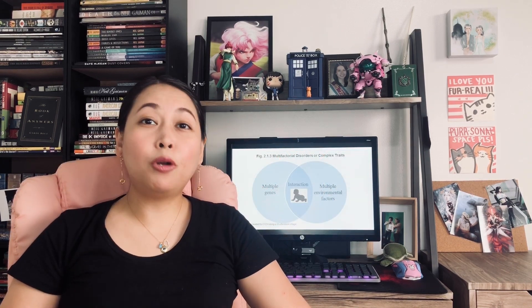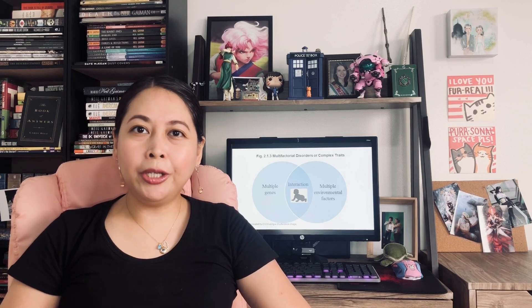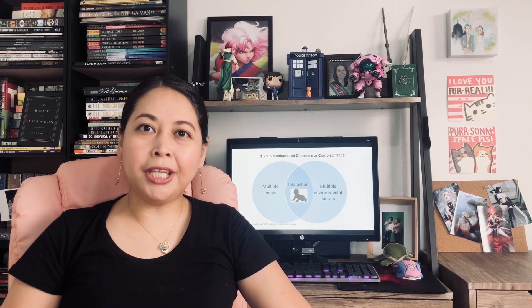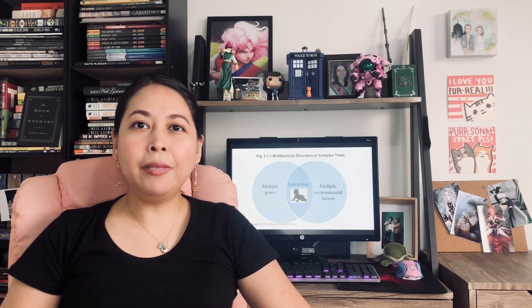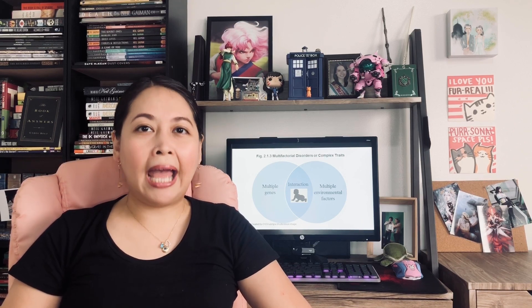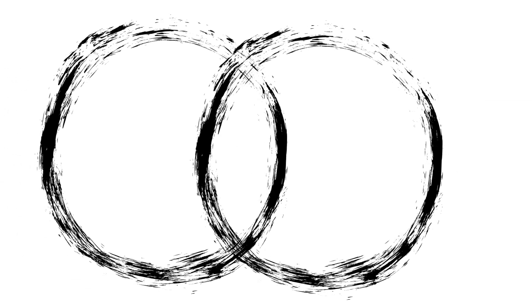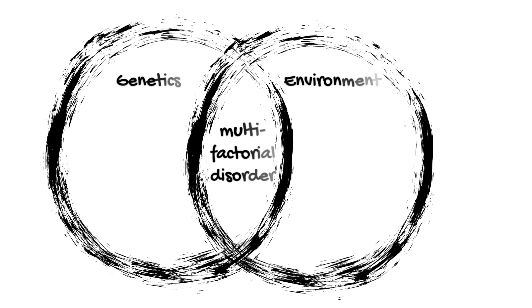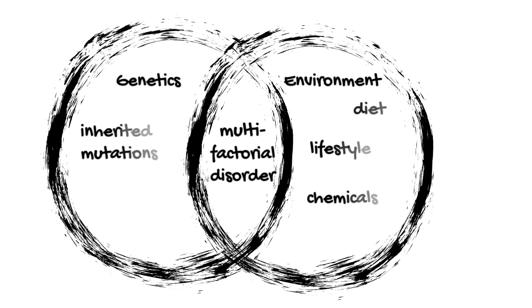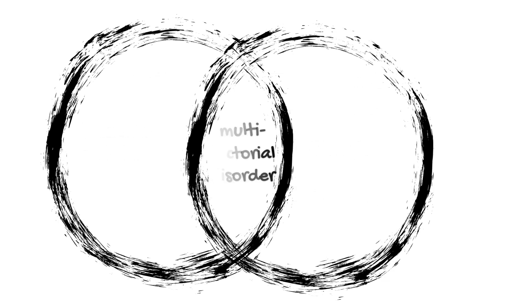Finally, there are complex or multifactorial disorders that arise from mutations in multiple genes and can be affected by your environment and habits. What distinguishes multifactorial disorders from other genetic diseases is that the inheritance patterns are not clear. And because it is a mixture of behavior and environment with genetics, some can have the genes but not the disease.